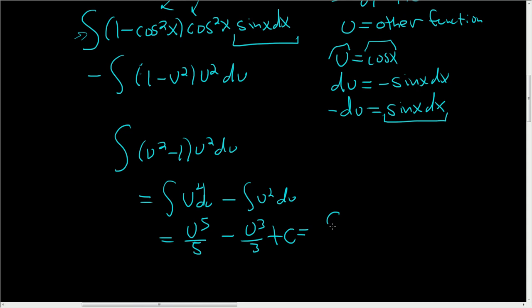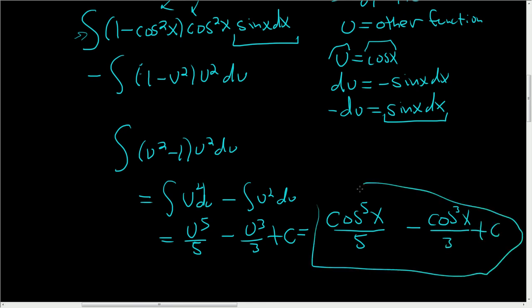And u was cosine, so this is cos⁵x/5 - cos³x/3 + C. And that's it.